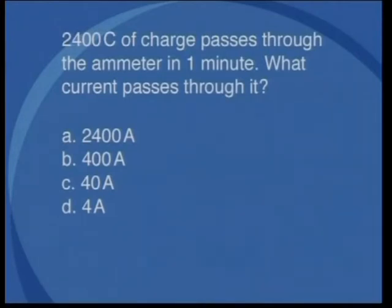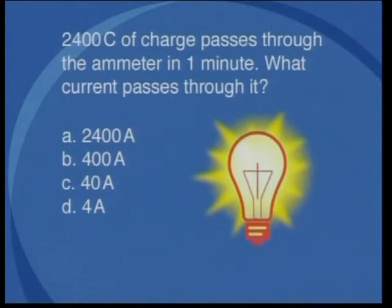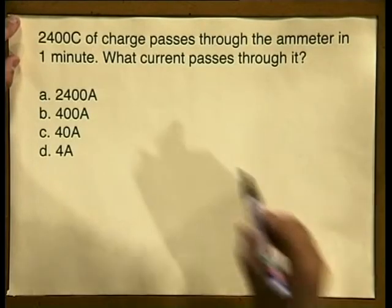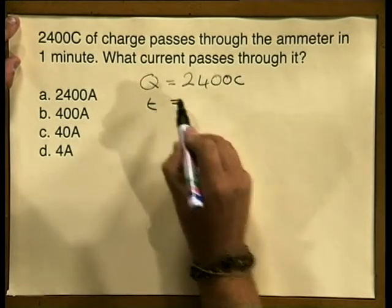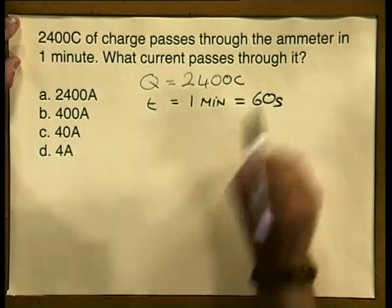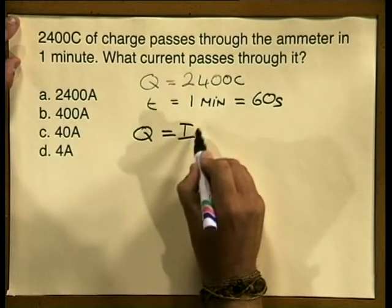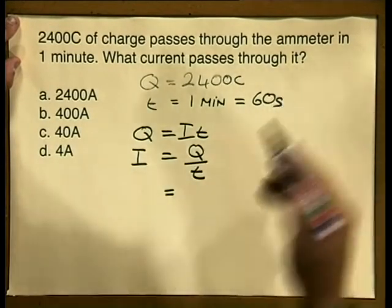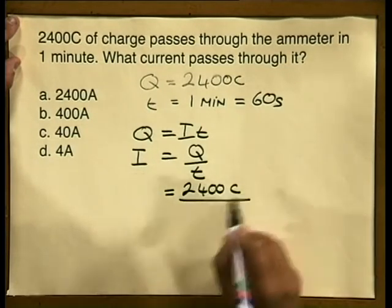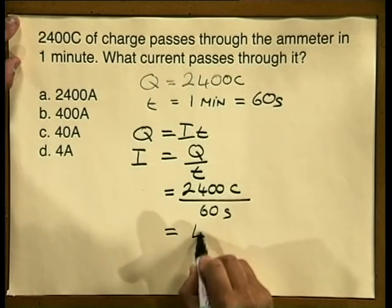Now for our final question. 2,400 coulombs of charge passes through the ammeter in one minute. What current passes through the ammeter? Will it be 2,400 amperes, 400 amperes, 40 amperes, or 4 amperes? Q is 2,400 coulombs and time is 1 minute, equaling 60 seconds. Writing our formula q is equal to i times t, therefore i is equal to q divided by t. Substituting, 2,400 coulombs divided by 60 seconds gives us an answer of 40 amperes.